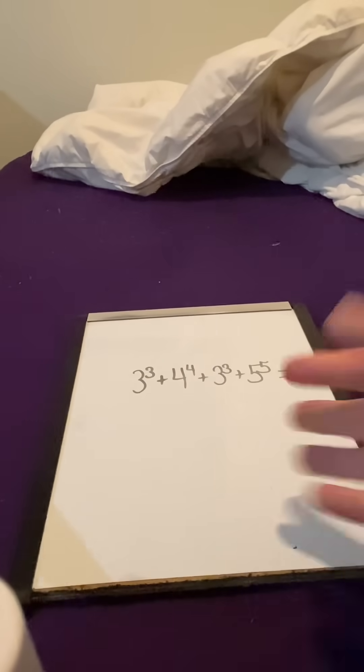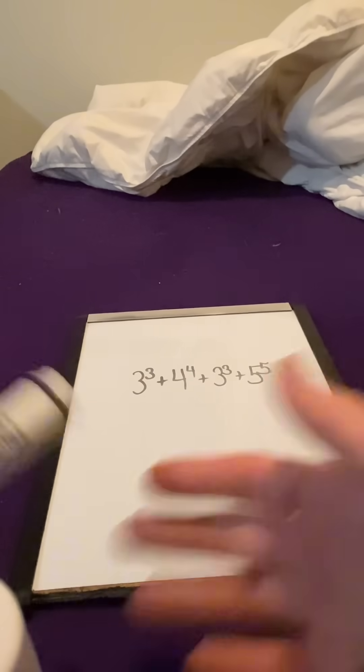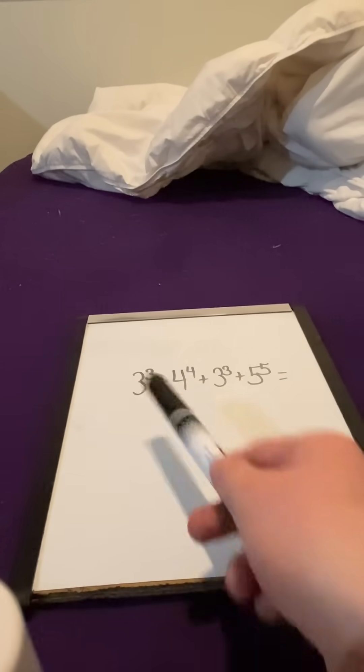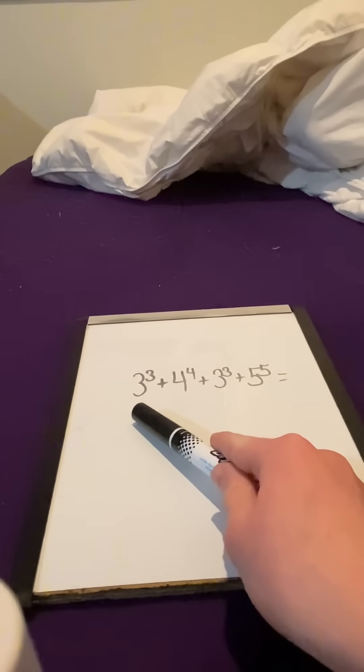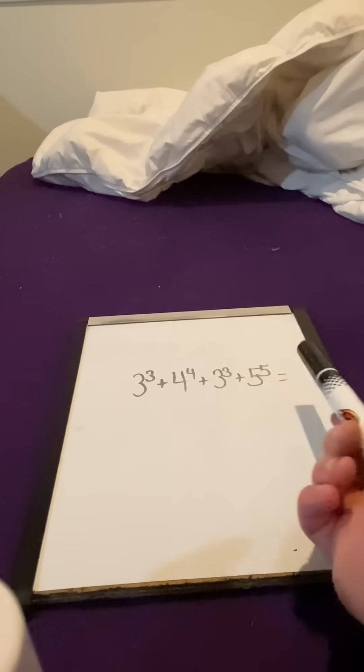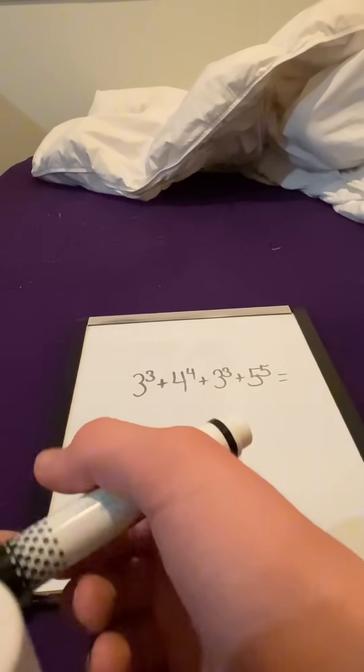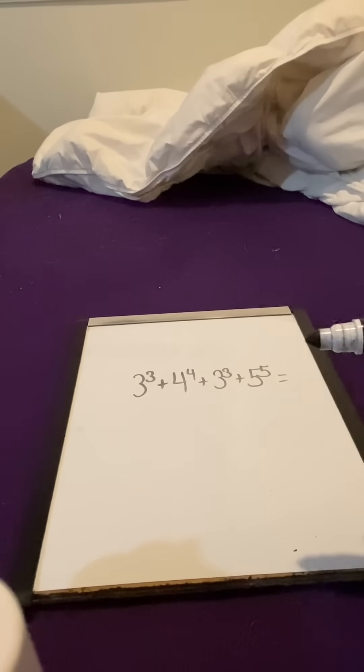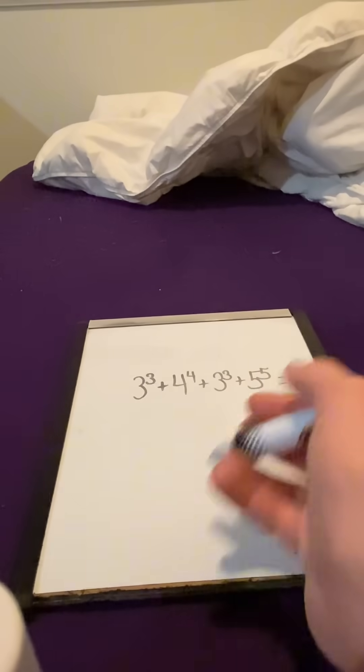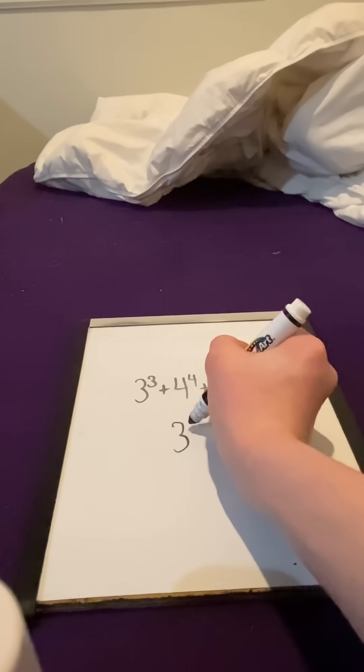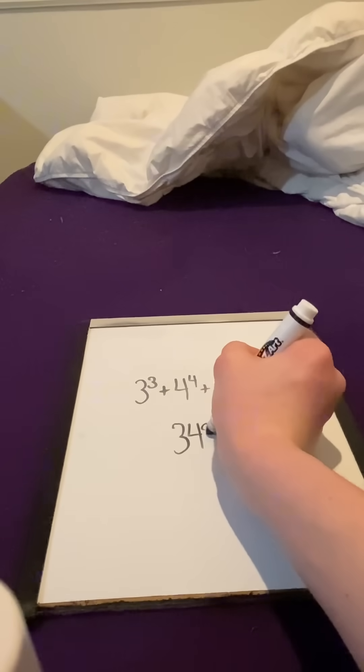Take a look at this. This might look like a pretty random equation, except for the fact the only non-random thing is that there's two threes, and every number is raised to the power of itself. But this is a very unusual equation, because this equals 3,435.